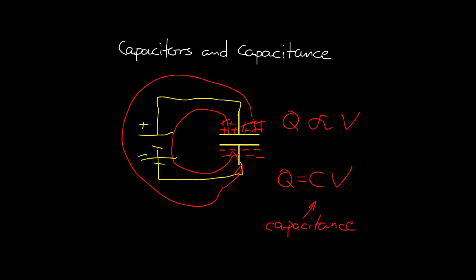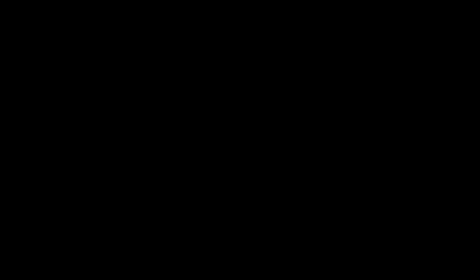If we use this equation, we can get a definition for the capacitance of a capacitor. We know that the amount of charge stored on the capacitor is equal to the capacitance multiplied by the potential difference over the capacitor. So if we rearrange this to say that the capacitance is equal to the amount of charge stored on the capacitor divided by the potential difference over the capacitor...